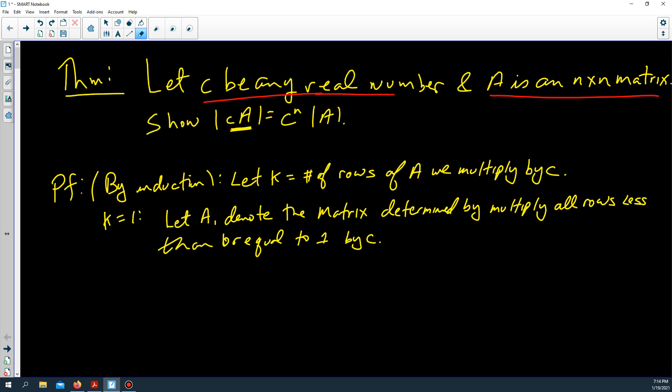Now in this case there's only one row, so the determinant of A_1 is clearly c to the one times the determinant of A.